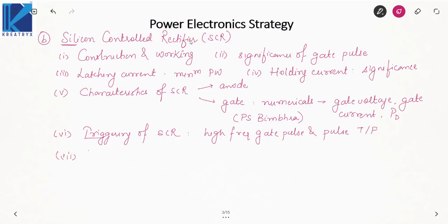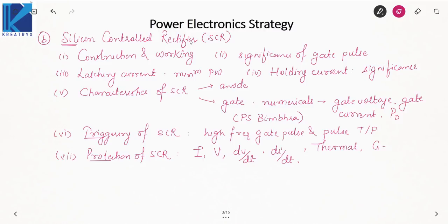Then you will study protection of SCR. There are various methods of protection such as gate protection, series protection, over-voltage protection, DV/DT protection, DI/DT protection, and thermal protection. Thermal protection is important because it employs the concept of heat sink, and numericals can be asked here. For DV/DT, there is a snubber circuit — this concept is also important. Similarly, in DI/DT, we also have a snubber circuit.